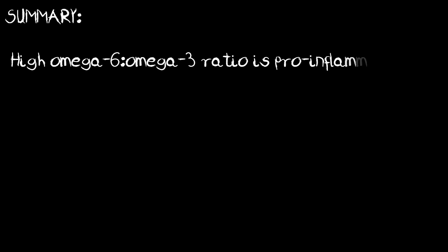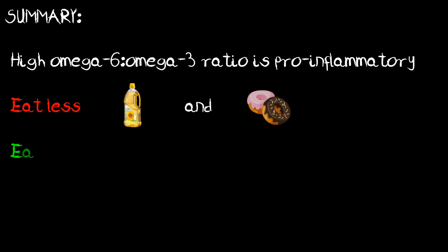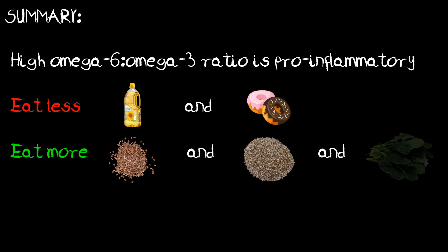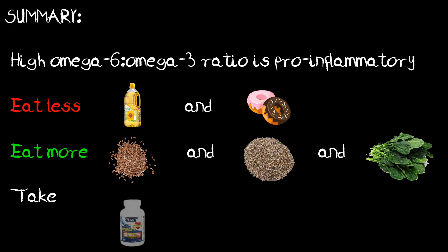To summarise: a high ratio of omega-6 to omega-3 in the diet is pro-inflammatory and implicated in the development of chronic disease. To improve this ratio, we must eat less omega-6 rich oil and junk food and more flax seeds, chia seeds and dark green leafy vegetables. Since it can be difficult to emulate all aspects of our natural diet, especially the fatty acid ratio, it is prudent to take a pollution-free, golden algae-based EPA/DHA supplement and give yourself some peace of mind. Simple.